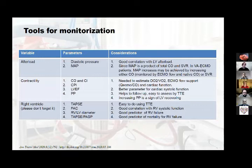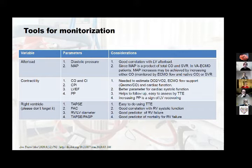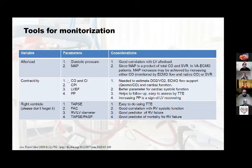In VA ECMO, how do we assess afterload? Keep it simple — diastolic pressure has good correlation with left ventricular afterload. But in VA ECMO, mean arterial pressure is a really important parameter for afterload, because we are controlling cardiac output externally. Mean arterial pressure is the product of cardiac output and systemic vascular resistance; since we know cardiac output from the ECMO, we assess mean arterial pressure as a proxy for vascular resistance.